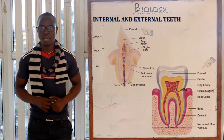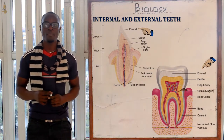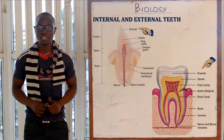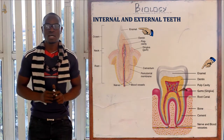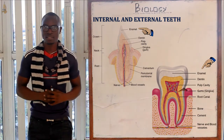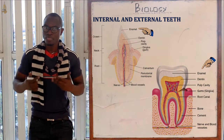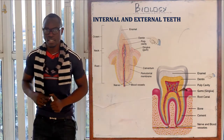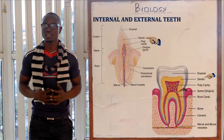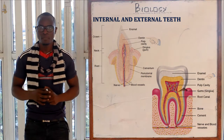Let's look at the enamel. It is mainly a non-living layer made up of calcium phosphate and carbonate. It mainly protects the inner delicate parts and is also used for cutting and grinding of food. Next, let's look at the dentine, which mainly comprises living cells that secrete the enamel.